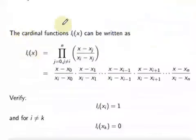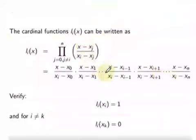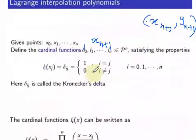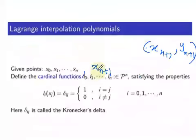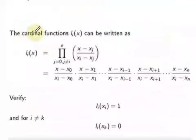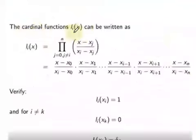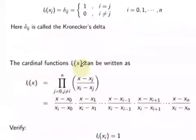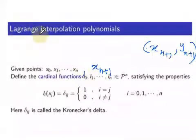If you want to include this new data point, you have to recompute all the cardinal functions again. That is a negative part of the Lagrange polynomial — you cannot include a new data point without recomputing the cardinal functions and summing them up.